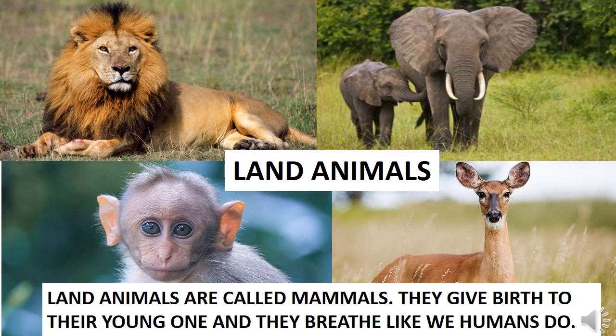Can you tell me the names of these animals? Lion, elephant, monkey and deer. Very good, children! All these animals walk on land. Do you agree? Have you seen them walking or running? They always walk on land, and these are land animals. What about dog and cat? They also walk on land, so they are also land animals.